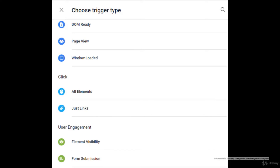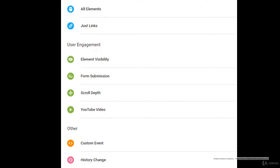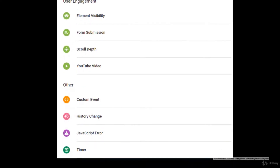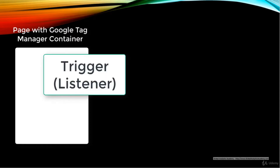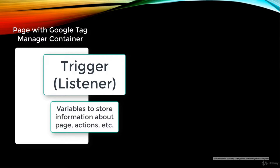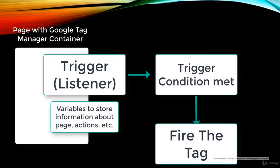There are various types of triggers in Google Tag Manager. Page view triggers listen for the page being fully loaded. Click triggers listen for any clicks on any element — links, buttons, images, etc. User engagement triggers cover element visibility, form submissions, scrolling, YouTube video watching, and others. Custom events can listen to events fired through the data layer, history changes, JavaScript errors, and timer delays. In summary: you have a container ready to listen, triggers that define the actions, and variables that store information passed to triggers and tags.